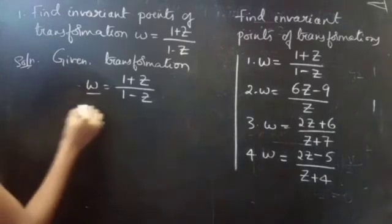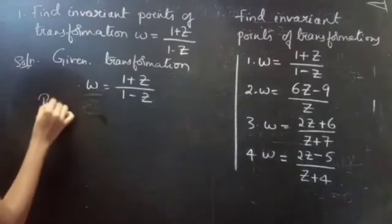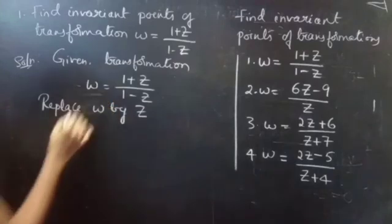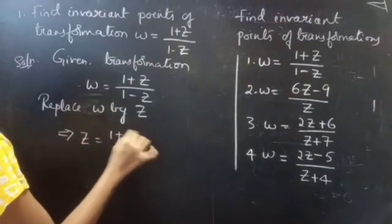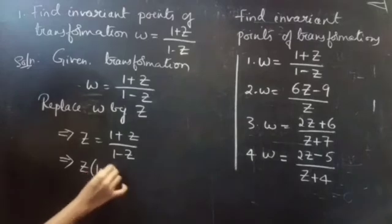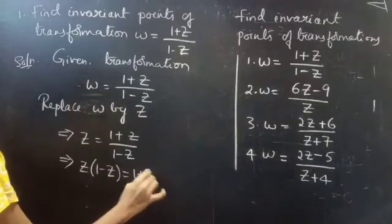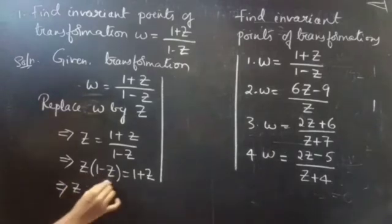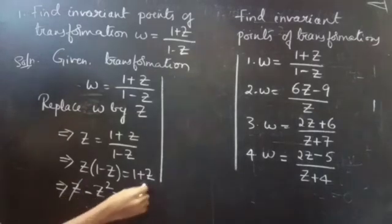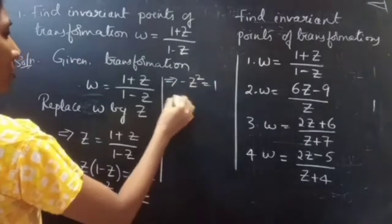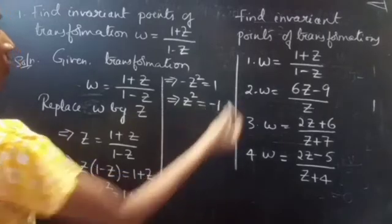Solution. Given transformation: omega equals to 1 plus z by 1 minus z. Now we are going to replace omega by z. So this becomes z equals to 1 plus z by 1 minus z. So we can write it as z into 1 minus z equals to 1 plus z. This implies z minus z squared equals to 1 plus z. So z and z get cancelled, and we get minus z squared equals to 1.